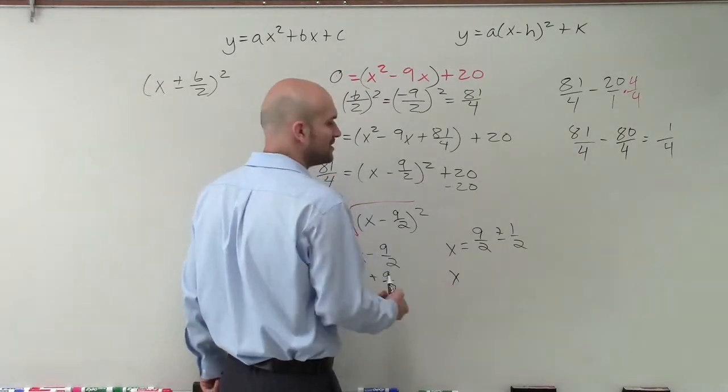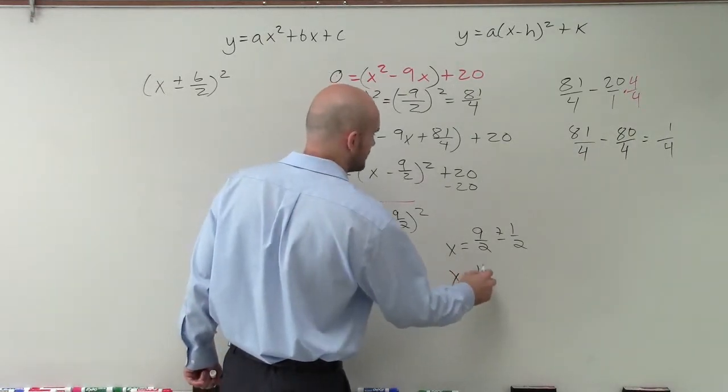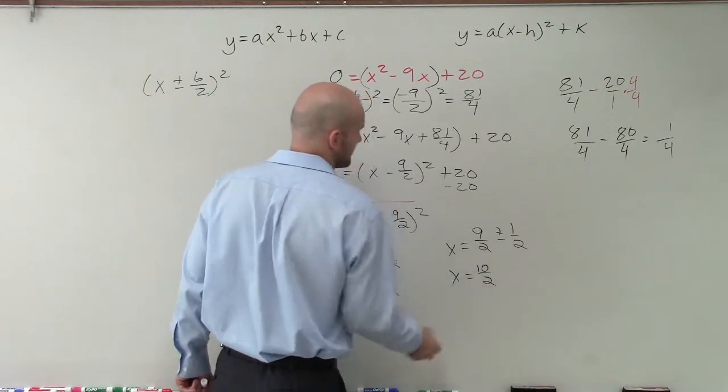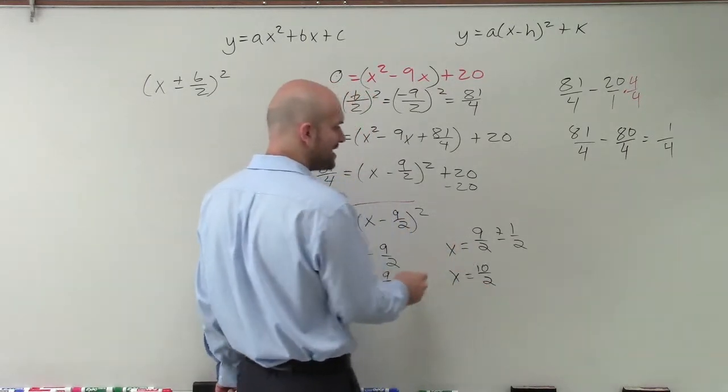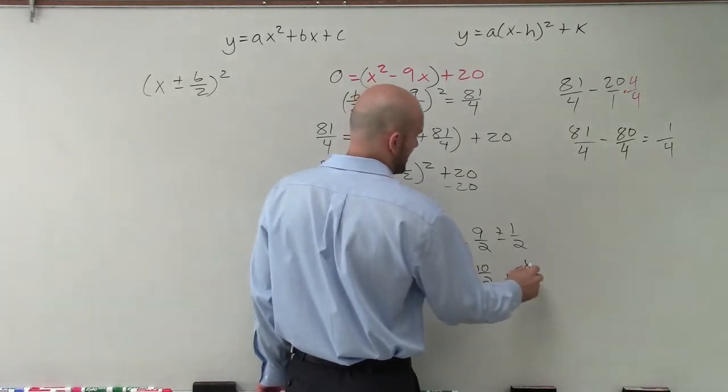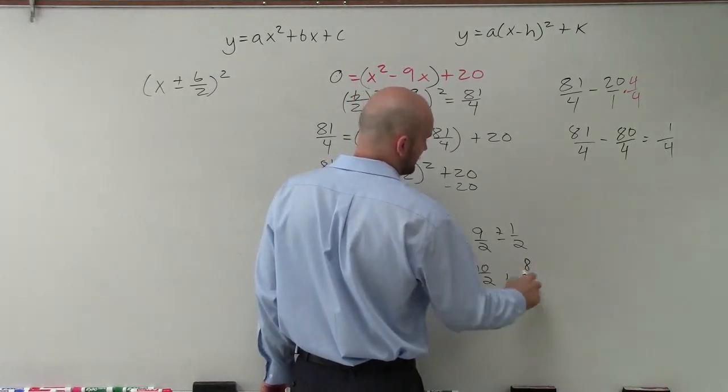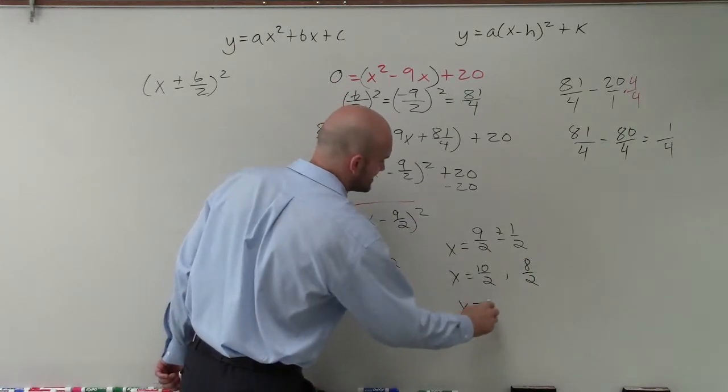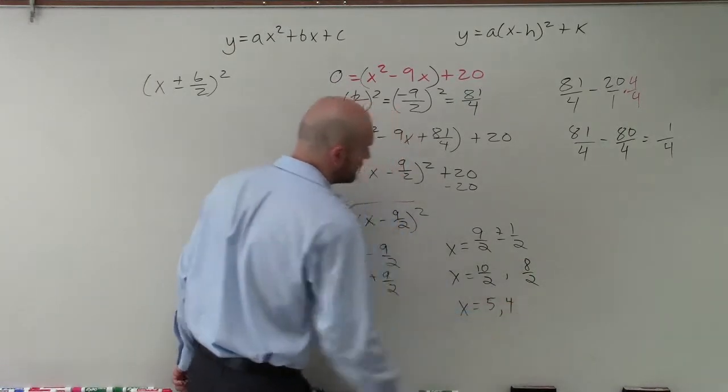So x equals 9 halves plus 1 half is going to equal 10 halves. And then x equals 9 halves minus 1 half is going to equal 8 halves. Not negative. 8 halves. And we can reduce both of these. So x equals 5 and 4.